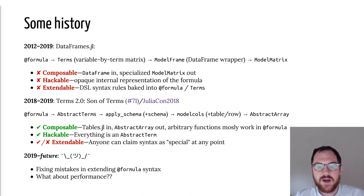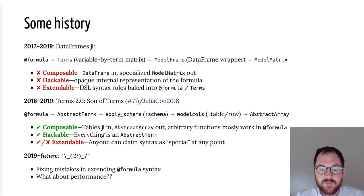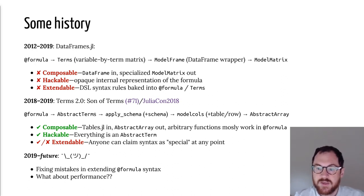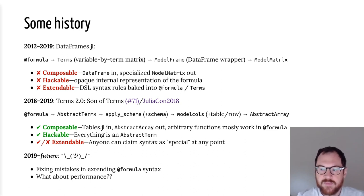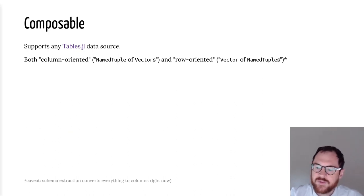What we're working on now is fixing those mistakes and implementing a proper extension of the formula syntax — which is part of why it took an entire year for that pull request to be merged — and starting to think about performance again. Performance wasn't listed as a core goal because doing this transformation is not often the bottleneck in your computational procedure. Let's talk about progress toward the goals of composable, hackable, and extendable.